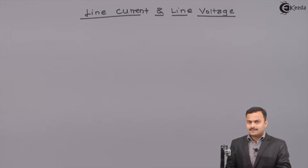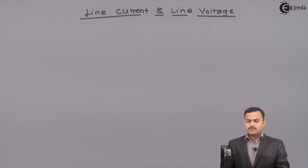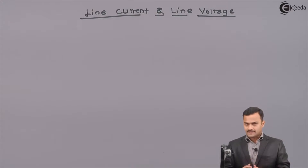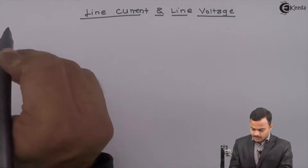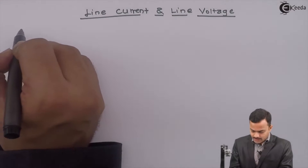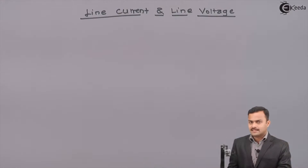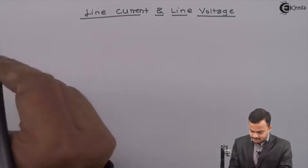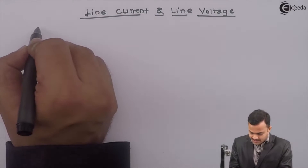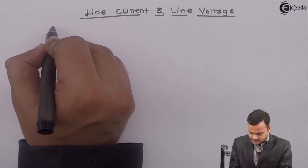In order to understand line current and line voltage, we need to consider a three-phase supply. I will consider star first, so the star supply will be like this.